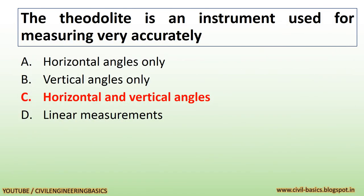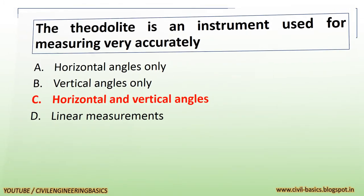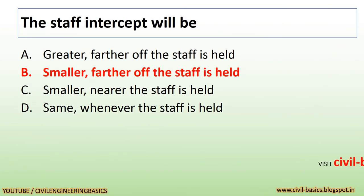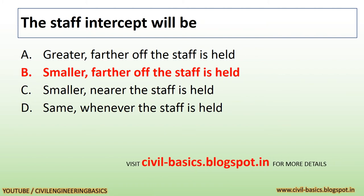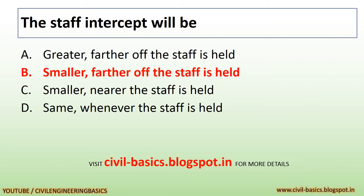The theodolite is an instrument used for measuring very accurately horizontal and vertical angles. The staff intercept will be smaller, the further off the staff is held.